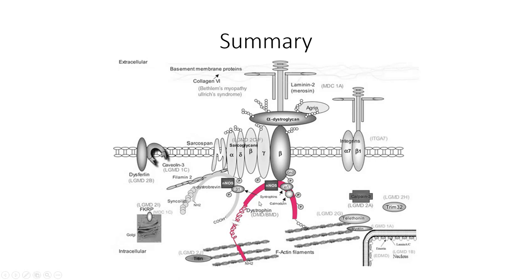A cysteine-rich domain binds to beta-dystroglycan, among a number of other transmembrane proteins, to anchor the contractile apparatus to the membrane. The C-terminus binds a number of additional proteins thought to be involved in signal transduction.